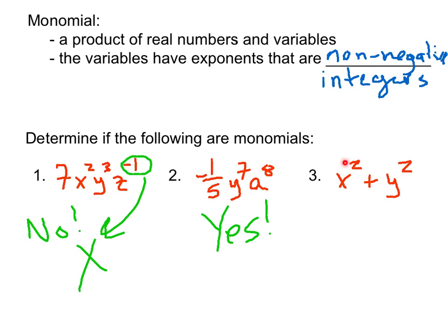And finally this last one, x squared plus y squared. We see that the exponents are non-negative integers, so that's good, and your instinct may be yes. But the problem is that x squared and y squared are not separated by multiplication — they're separated by addition. So by our definition this would be no, because we can only have multiplication between them. That makes it a binomial — two different terms, separated by addition and subtraction. Monomial means one term, and this is not one term.